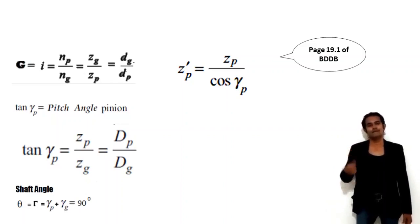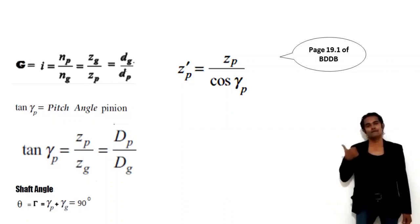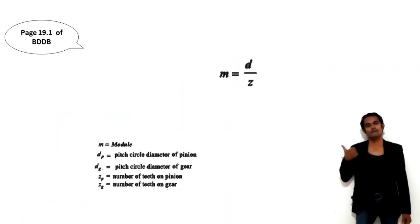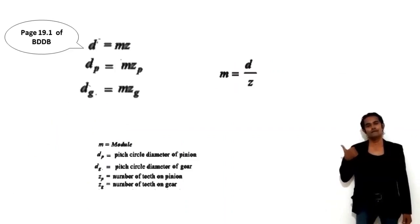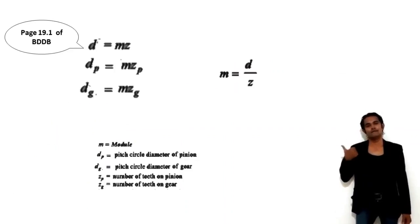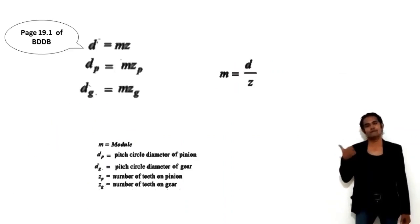This is on page 19.1 of the Bhandari design data book. Next, calculate the pitch circle diameters: DP = M × ZP and DG = M × ZG, i.e., pitch circle diameter equals module multiplied by number of teeth.